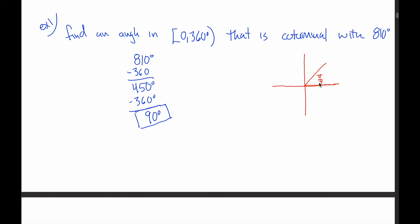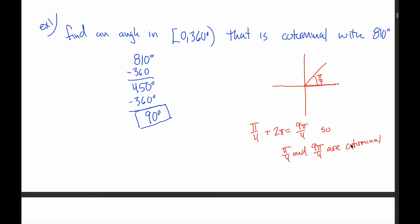There's nothing special about degrees — we can do all this same work in radians. Let's use pi over 4 radians, also known as 45 degrees. That's the angle halfway to our positive y-axis measured from our positive x-axis. What other angles in radians would leave us at that exact same spot? Since it's 2 pi to get all the way around the circle, we'd be coterminal if we did 2 pi and another pi over 4. 2 pi is 8 pi over 4, so 2 pi plus pi over 4 equals 9 pi over 4. Pi over 4 and 9 pi over 4 are coterminal.